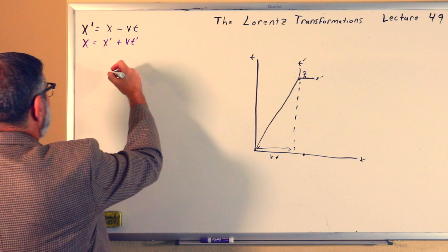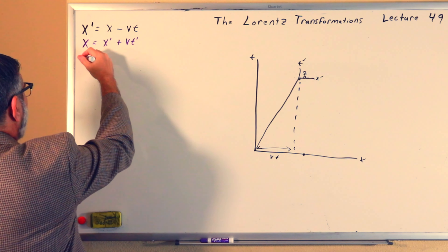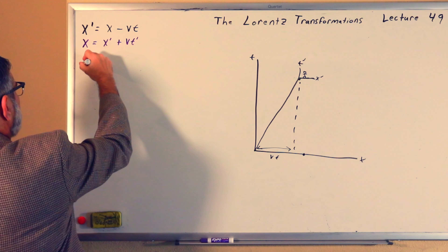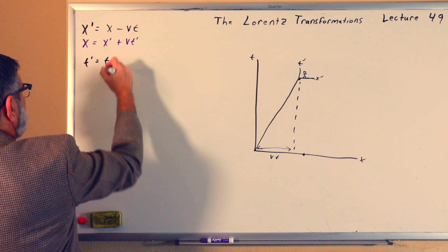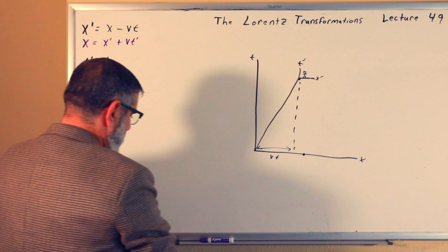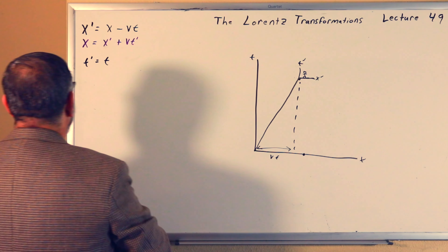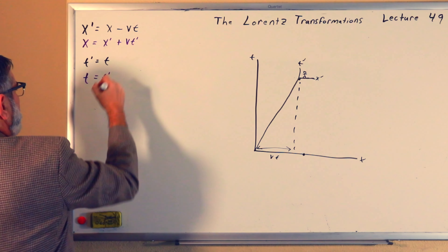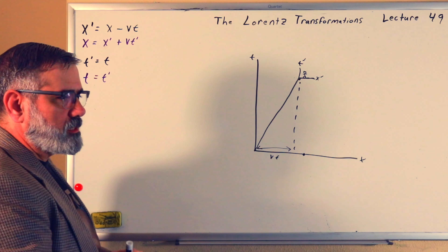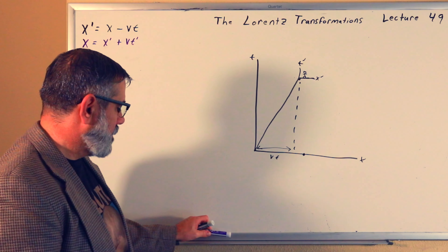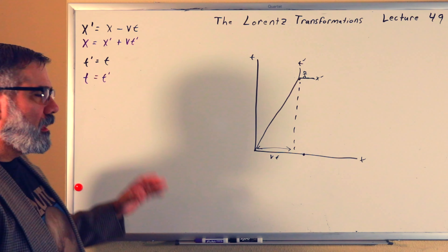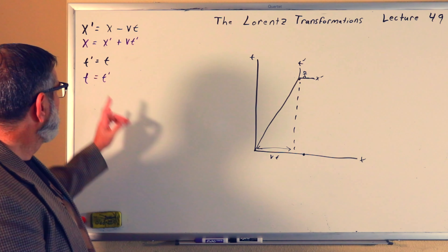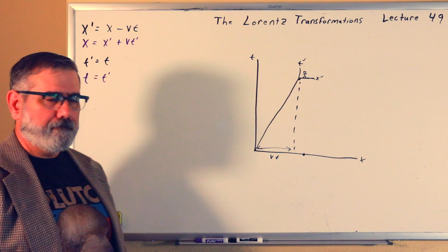We could also say that t prime is equal to t, and t is equal to t prime — that's the inverse transform for time. In the Galilean transformations, both times are the same.